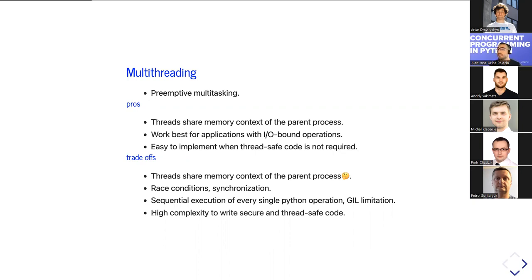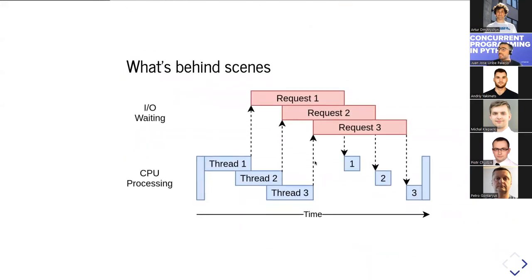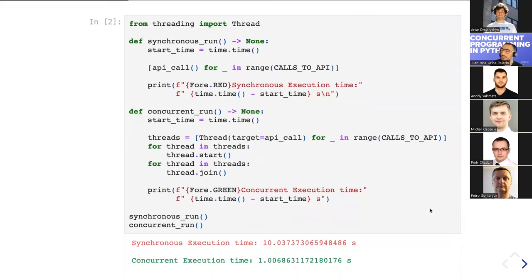Multi-threading also has high complexity for writing secure thread-safe code — locking, queues, connection pools. We'll focus more on multi-processing and async. Behind the scenes, threads share the same memory context spawned by the parent process. In terms of time, they overlap the waiting periods of I/O processing and return responses to the parent process.